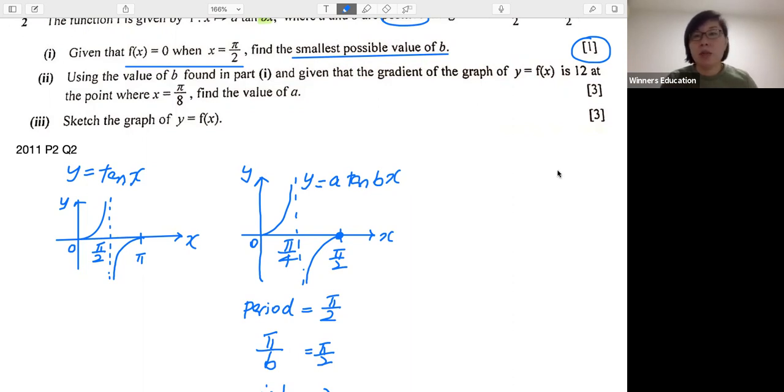So let us take a look at part two of this question. Using the value of b found in part one, and given that the gradient of the graph of y equals f(x) is 12 at the point where x equals π/8, find the value of a. So this is my part one. Now we're going to go into part two.